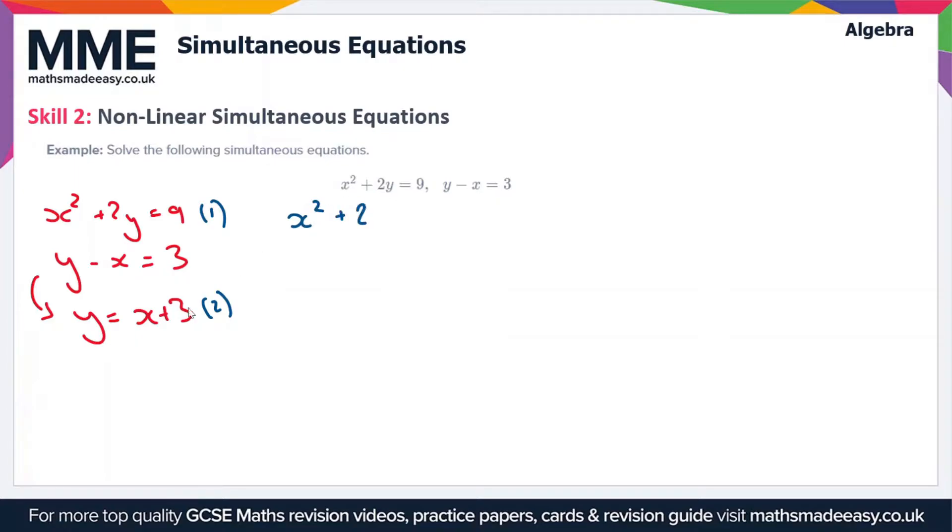x² + 2 times y, so 2 times (x + 3) = 9. This gives us x² + 2x + 6 = 9. Now we can rearrange this to get x² + 2x - 3 = 0.